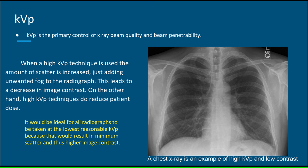KVP is the primary control of x-ray beam quality and beam penetrability. When a high KVP technique is used, the amount of scatter is increased, just adding unwanted fog to the radiograph. This leads to a decrease in image contrast. On the other hand, high KVP techniques do reduce patient dose. It would be ideal for all radiographs to be taken at the lowest reasonable KVP, because that would result in minimum scatter and thus higher image contrast. A chest x-ray is an example of high KVP and low contrast.